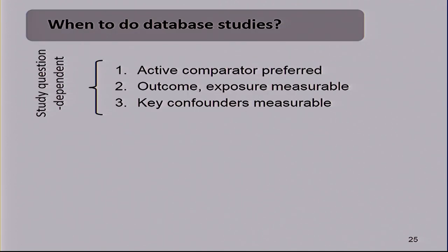The key question is: when should you do database studies? When do we feel comfortable not going through baseline randomization? The study question-dependent characteristics that favor a database study: one is if you have an active comparator. If you have an active comparator — like canagliflozin versus GLP-1s — you feel much more comfortable because a physician decided to escalate treatment and some patients got this drug, some got that, but they're much more comparable than a non-user group. Non-user groups are tricky because there's usually a reason why they didn't get treated.